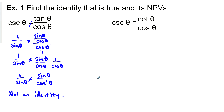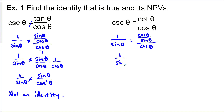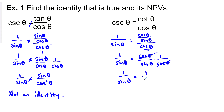Let's try the other one. Cosecant theta — again, that's 1 over sine theta. On this side, we've got cotangent theta, so that would be cos theta over sine theta, all over cos theta. Multiply by the reciprocal: cos theta over sine theta, times 1 over cos theta. You can see that the cos thetas cancel, and we're left with 1 over sine theta equals 1 over sine theta. So this is true — this is an identity.